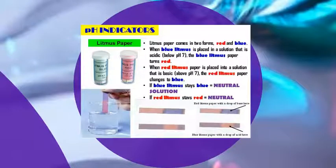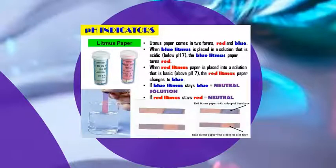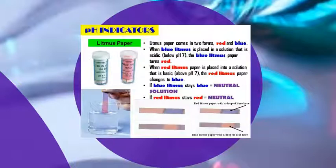Litmus paper comes in two forms: red and blue. When blue litmus paper is placed in a solution that is acidic — below pH 7 — the blue litmus paper turns red. When red litmus paper is placed into a solution that is alkaline, the red litmus paper changes to blue. If blue litmus paper stays blue, that means neutral solution. The same applies to red litmus paper staying red — they are also neutral.